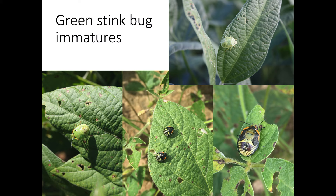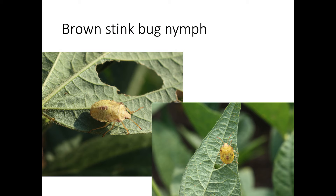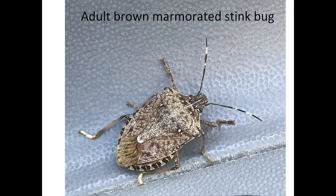Brown stink bugs are another very common species in Tennessee beans. The brown stink bug adult looks like a softer insect and is light — almost a lime green or tannish in color. Green stink bugs and brown stink bugs are the most common species found in Tennessee beans. However, it has become easier lately to find brown marmorated stink bugs in our beans as well, and these are seed-feeding pests also.